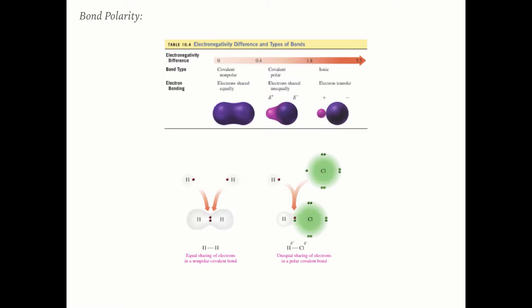We represent bond polarity with a dipole arrow pointing towards chlorine, which has a partial negative charge due to its greater electron cloud. If the difference in electronegativity is extreme — as with a metal and a nonmetal, where metals have very low and nonmetals very high electronegativity — the nonmetal actually steals the electron, giving you an ionic bond.